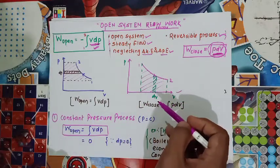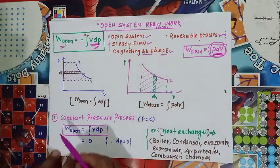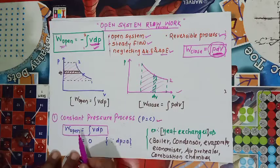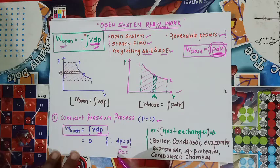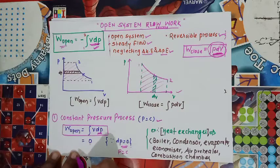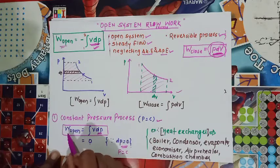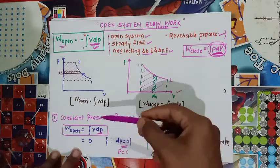Let us derive the open work equation for certain processes. The first process is constant pressure. Since pressure is constant, integration of VdP gives zero, because dP = 0 — differentiation of any constant is zero. So open flow work is zero for all constant pressure processes.